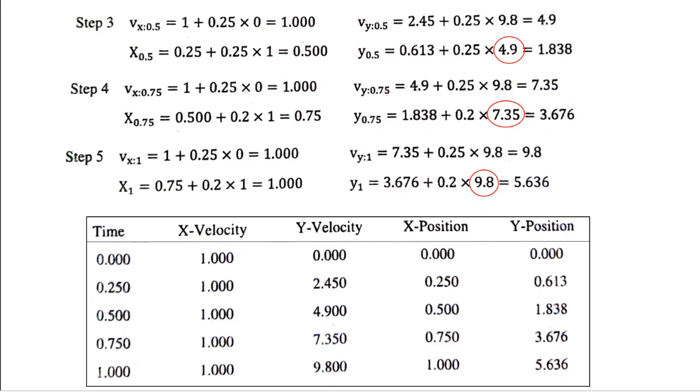There is no change in the x velocity. Whatever is the initial velocity that is maintained in the subsequent steps. So you can write this even without making any calculation. Since x velocity is a constant, you can see that the change in x position is uniform. And these are the y velocities and corresponding y position. As I said, the calculated values are slightly wrong. You need to calculate them.